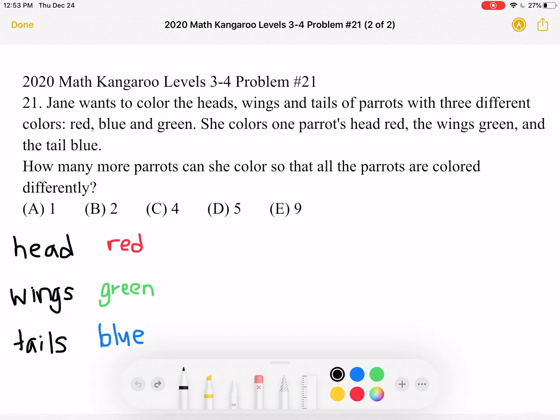So Jane wants to color the head, wing, and tail of each parrot with three different colors, and we're looking for the number of ways she can do this.